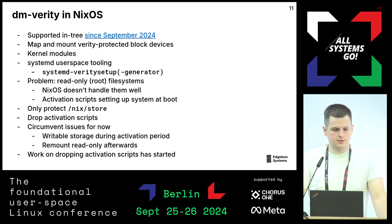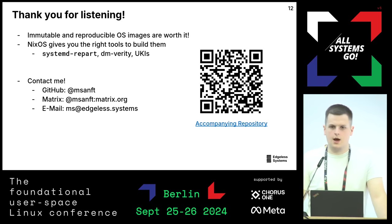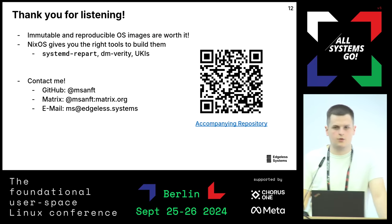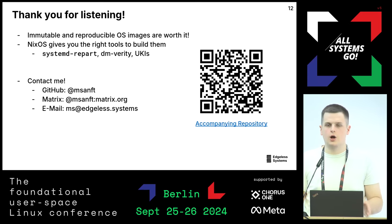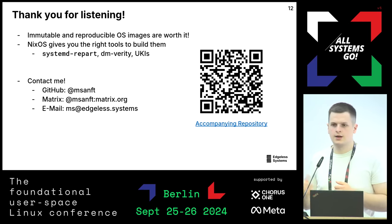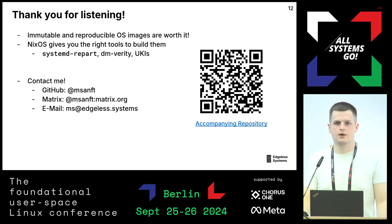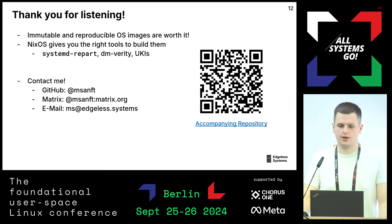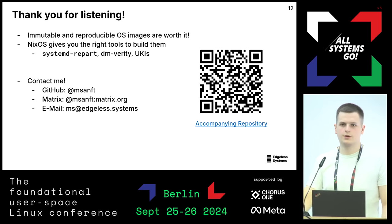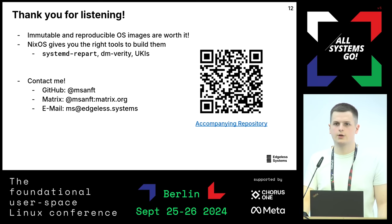To conclude: immutable and reproducible OS images are definitely worth it. If you have measured boot, you always want reproducible builds — it's better than build provenance. Currently, NixOS and Nix give you the best tools at hand to build such images, even though MKOSI does quite an effort too. There's an accompanying repository for this talk where I implemented everything discussed, with an exemplary build target of an immutable NixOS system you can boot with QEMU.